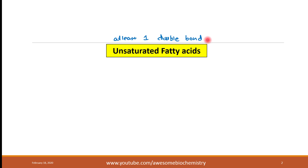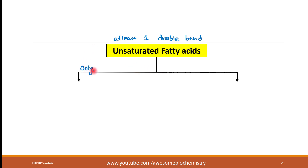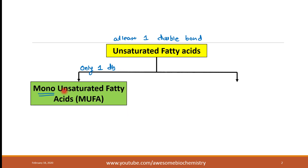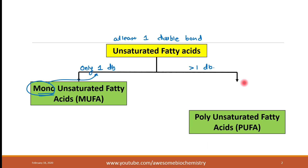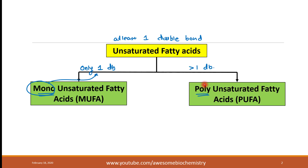Based on the number of double bonds, unsaturated fatty acids are further divided into two groups. If only one double bond is present, we call it a monounsaturated fatty acid — mono means only one double bond. If more than one double bond is present, we call it a polyunsaturated fatty acid — poly means more than one.